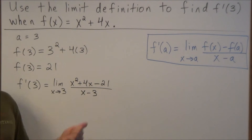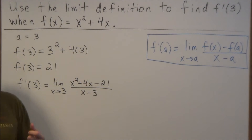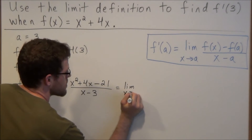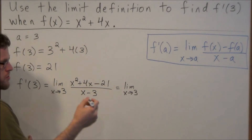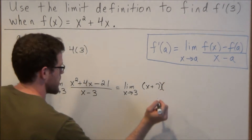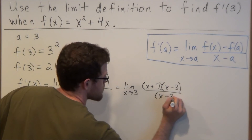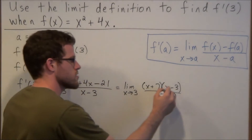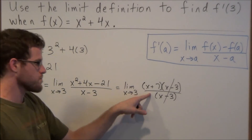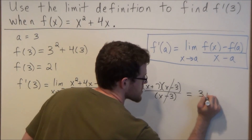From this stage of the problem, we just need to factor the quadratic and try to simplify this limit algebraically. So we have the limit as x approaches 3. If we factor our numerator, we have x plus 7 times x minus 3 over x minus 3. Right away, we notice these common factors cancel, and we can evaluate our limit by plugging in x equals 3. So our remaining factor gives us 3 plus 7.